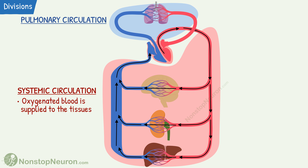Then we have pulmonary circulation, also called lesser circulation. Here, blood is pumped from the right ventricle to the lungs through the pulmonary artery. The exchange of gases occurs between blood and the alveoli of the lungs at pulmonary capillaries. Oxygenated blood then returns to the left atrium through the pulmonary veins. Thus, in pulmonary circulation, the blood gets oxygenated in the lungs. The blood then enters the systemic circulation again and the cycle is repeated.